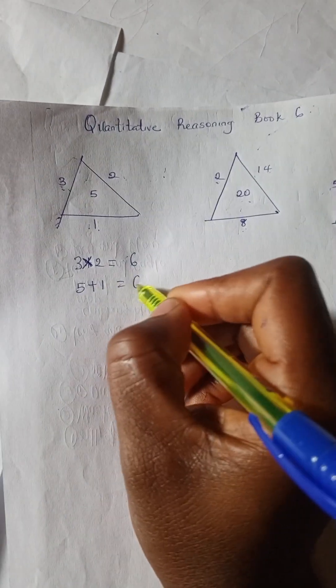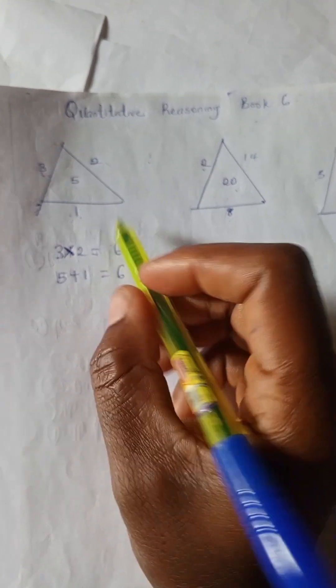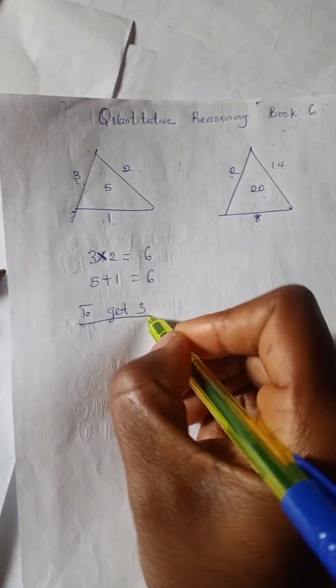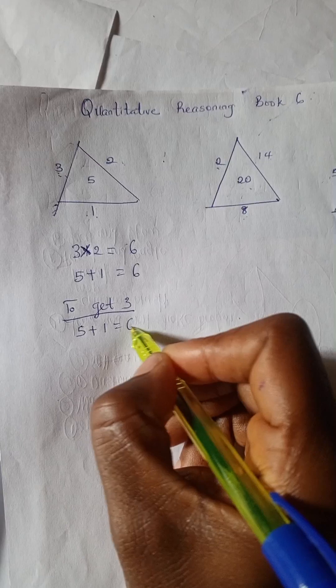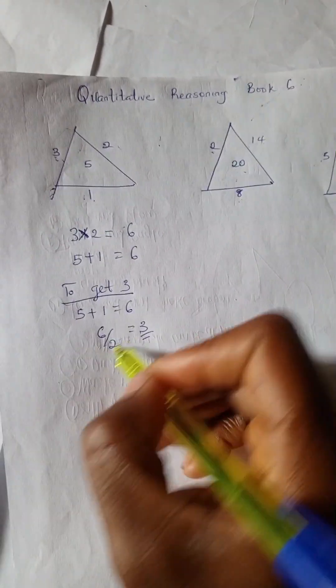To get 3, I'm going to have 5 plus 1, which is 6, and 6 divided by 2 is 3.